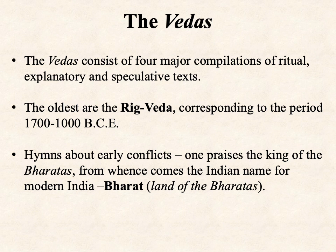In the Rig Veda texts we find mostly hymns about early conflicts. One praises the king of the Bharatas — this is where the Indian name for modern-day India comes from: Bharat, meaning land of the Bharatas. There's a lot of myth and epic stories about relationships between kings and princes. How much of it reflects actual people is debatable, but it does tell us something about the social hierarchy of the early Aryan people and their value systems.